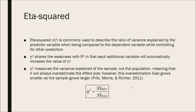Starting off with eta squared. Eta squared is commonly used to describe the ratio of variance explained by the predictor variable when being compared to the dependent variable while controlling for other predictors. Eta squared shares a weakness with R squared in that each additional variable will automatically increase the value of eta squared. Eta squared measures the variance explained of the sample, not the population, meaning that it will always overestimate the effect size. However, this overestimation bias grows smaller as the sample grows larger, so eta squared will be a statistic and not a population parameter. The formula is simply the sum of squares of the effect divided by the total sum of squares.